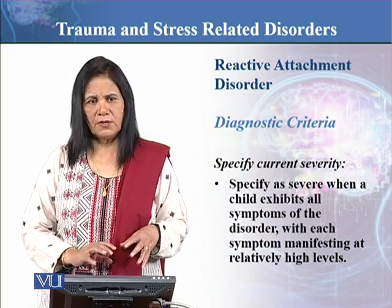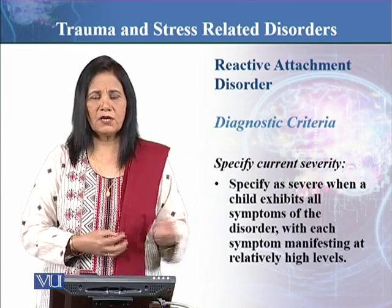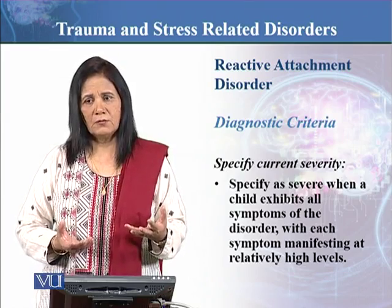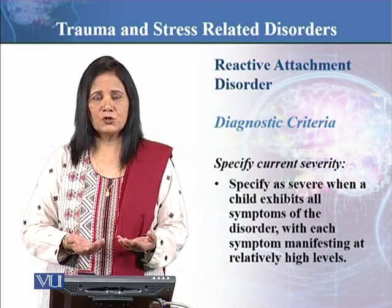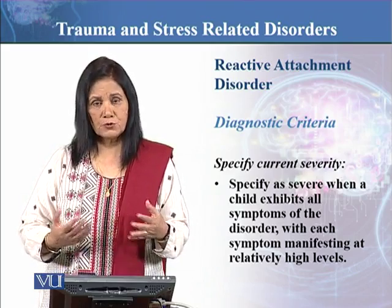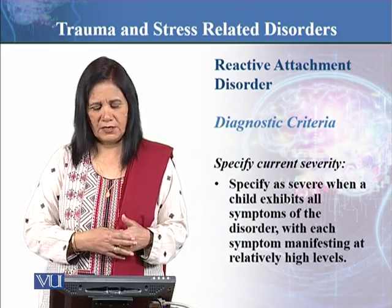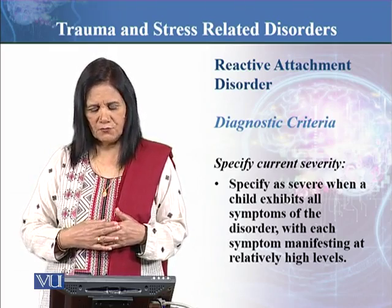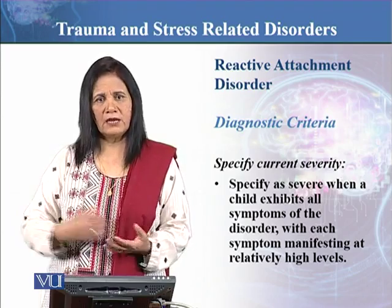You also need to specify the severity of the disorder — it may be mild, moderate, or severe. Every symptom the child shows, such as emotional aloofness, social withdrawal, failure to reciprocate emotions, sadness, or feeling low, must be discussed and specified. Severity is specified when a child exhibits all symptoms of the disorder with each symptom manifesting at relatively high levels.